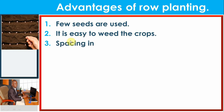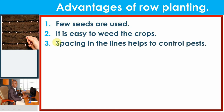Another advantage is that spacing in lines helps to control pests — living organisms that destroy crops, such as birds and insects. When there is spacing, pests can easily be controlled because moving from one plant to the next becomes hard for them, and the farmer can easily come and spray and kill them before they attack other plants.